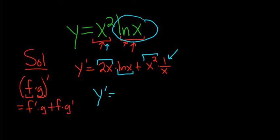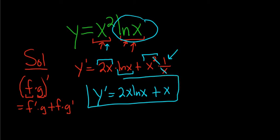The last thing to do is maybe simplify this. This is 2x ln x, and then here the x's cancel, so you just get plus x. And that is the final answer.